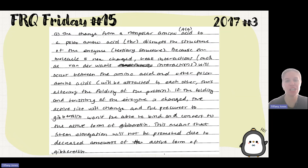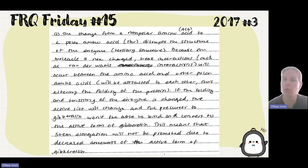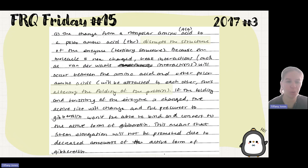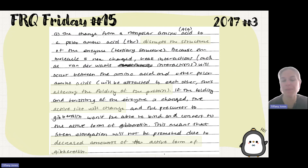The student sample answer says: the change from a non-polar amino acid to a polar one disrupts the structure of the enzyme. Because the molecule is not charged, weak interactions such as van der Waals interactions will occur between the amino acids, and polar amino acids will be attracted to each other, altering the folding of the protein. If the folding and twisting of the enzyme is changed, the active site will change and the precursor to gibberellin won't be able to bind and convert to the active form of gibberellin. This means stem elongation will not be promoted due to decreased amounts of active gibberellin.